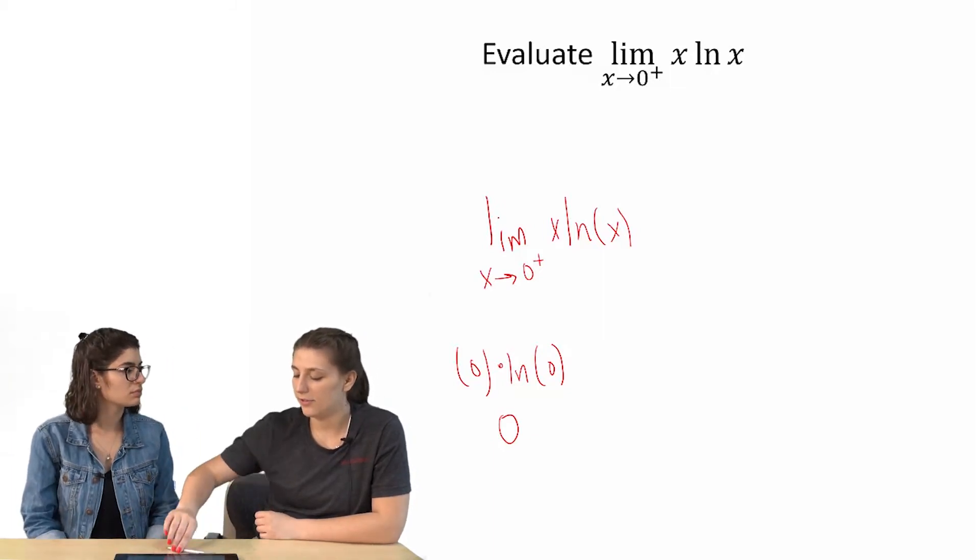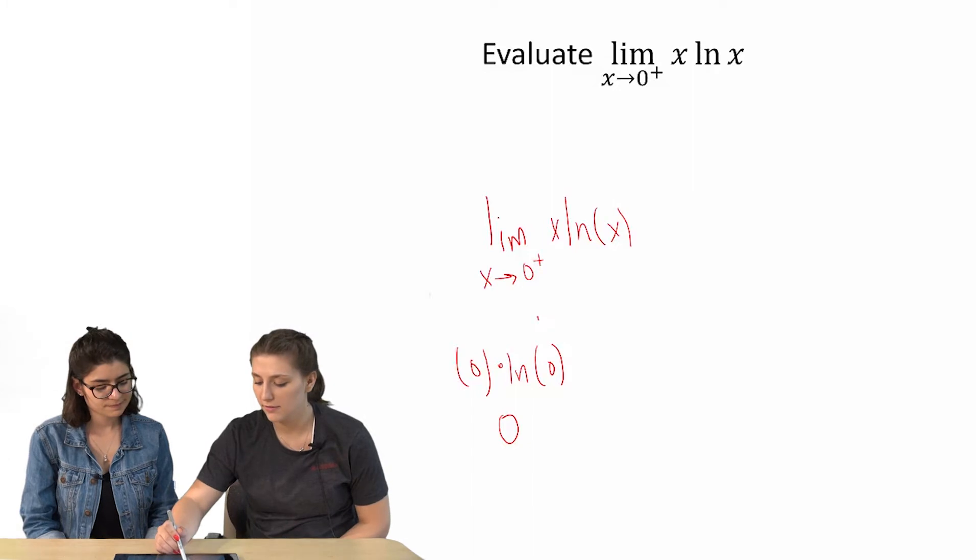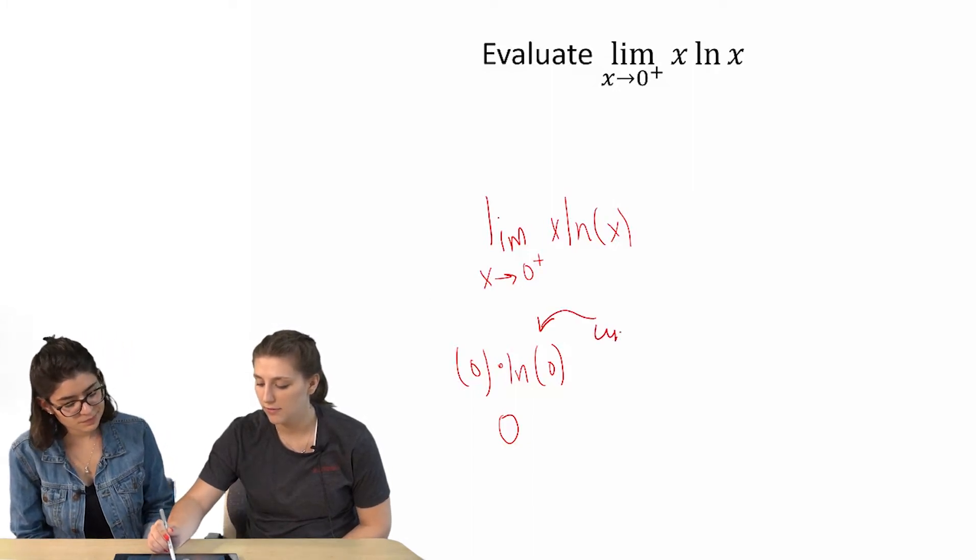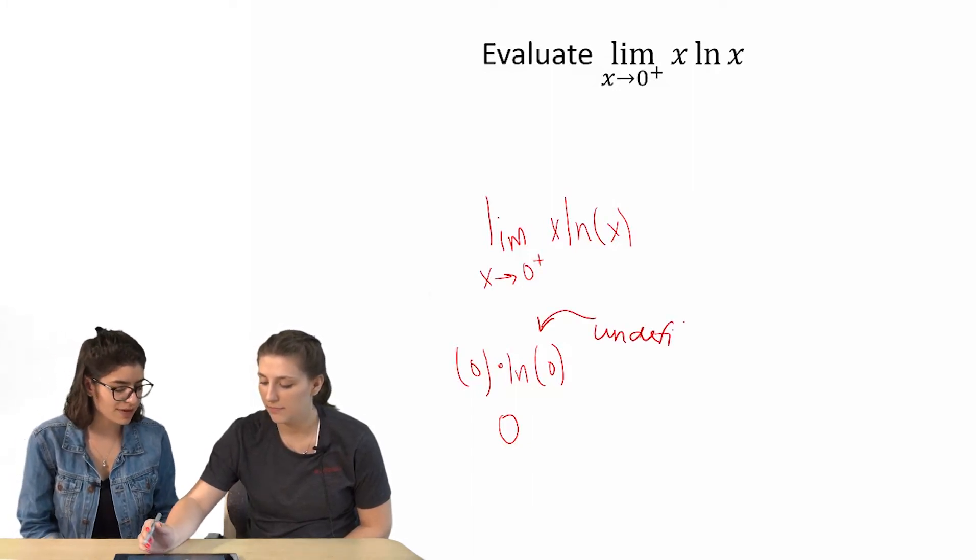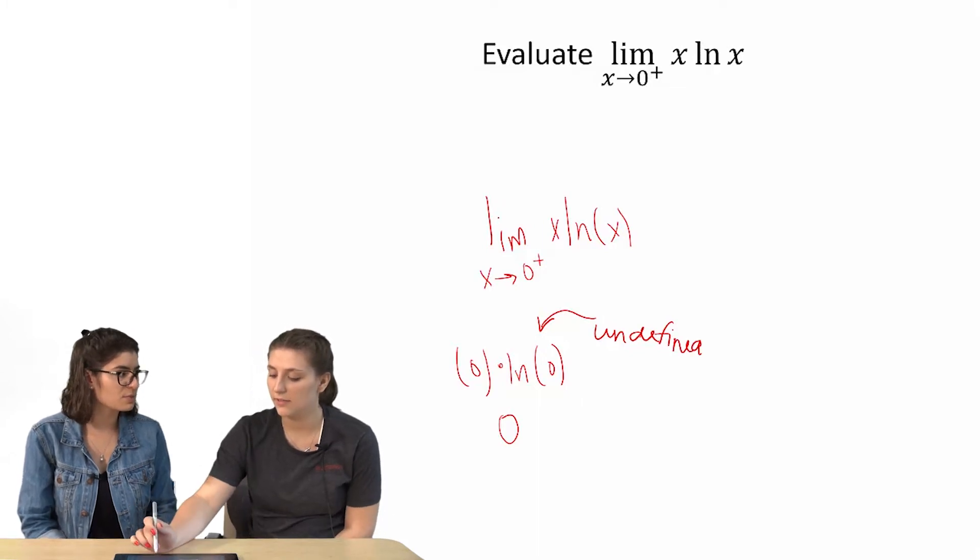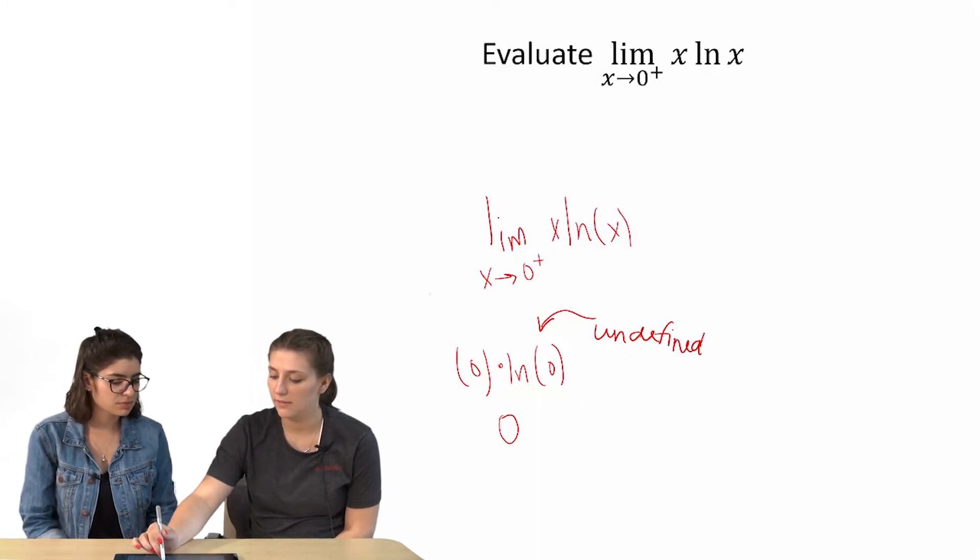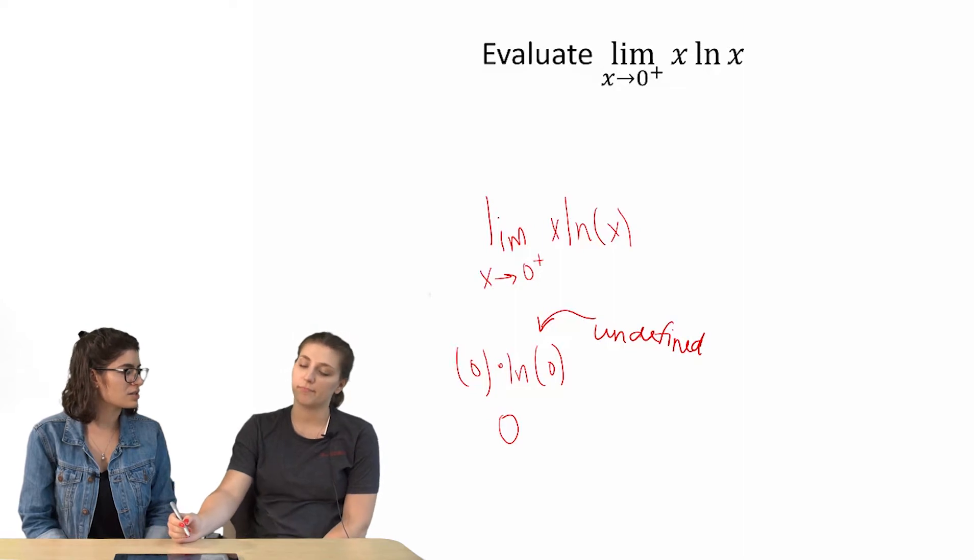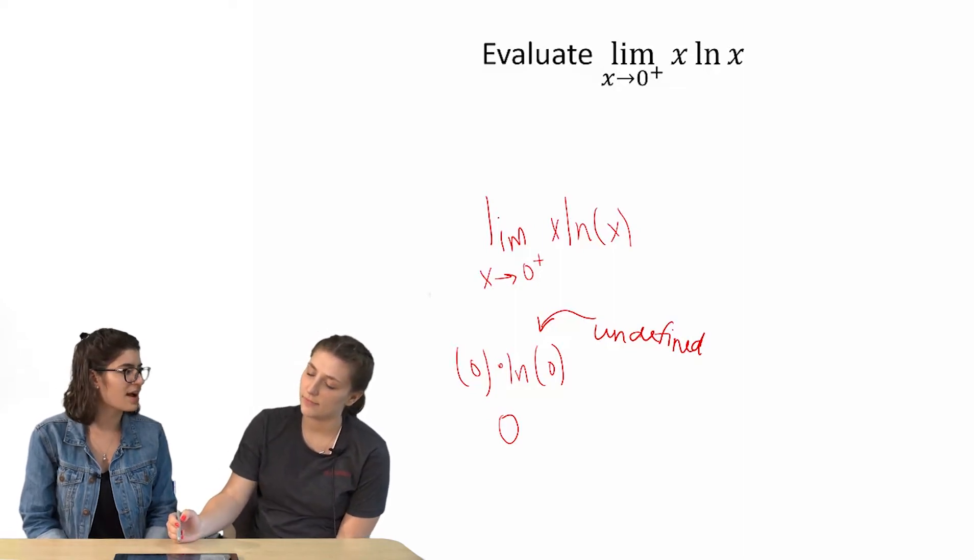Yeah, but the natural log of zero is undefined. So do you think that would affect it? Because you're still just multiplying by zero. Isn't zero times anything just zero, so it would kind of cancel out the fact that it's undefined?